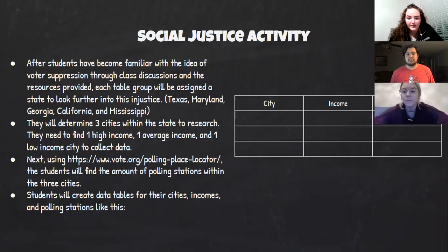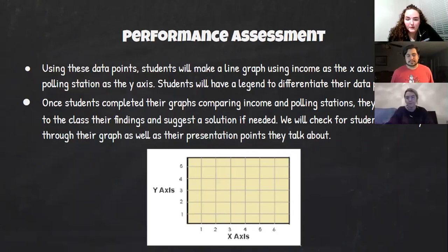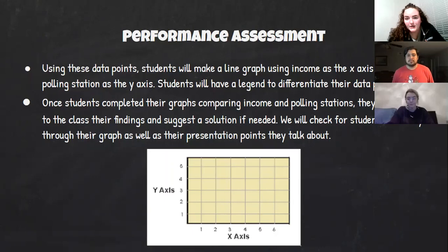Using a table, students will record the city, income level, and number of polling stations. Then they will plot the points on a graph and create a legend to differentiate their data points. After compiling all their data, they will present it to the class. We hope students find that higher income communities have more polling stations while lower income communities have very few — sometimes just one — which is the main focus of our lesson.